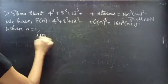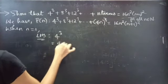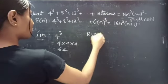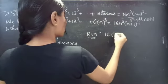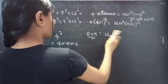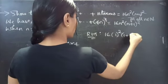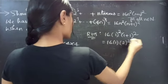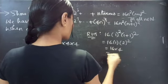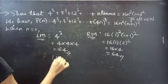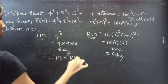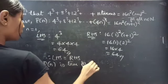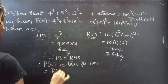When n equals 1, from LHS we have only the first term. 4³ equals 4 times 4 times 4 equals 64. For RHS, substitute n equals 1: 16 times 1² times (1+1)² equals 16 times 1 times 2² equals 16 times 4 equals 64. So LHS equals RHS. From this, we can see that P(n) is true for n equals 1. Therefore, P(1) is true.